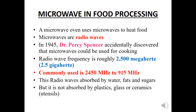Percy Spencer was the first person who discovered that microwaves are used for cooking. Radio waves are in the frequency of roughly 2500 megahertz, that is 2.5 gigahertz. The commonly used frequencies of microwave technology are 2450 megahertz and 915 megahertz. Radio waves are absorbed by water, fat, and sugars — that is, the food molecules or food substrates absorb these radio waves.